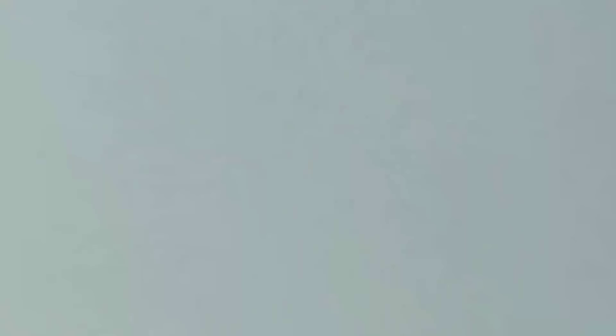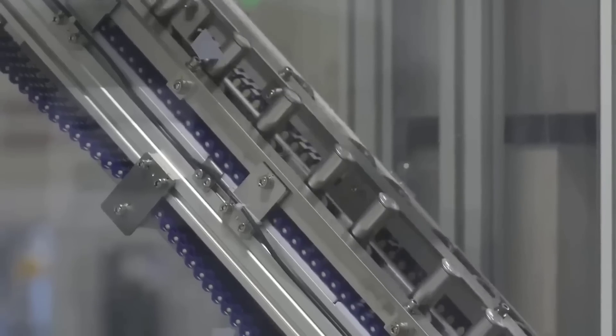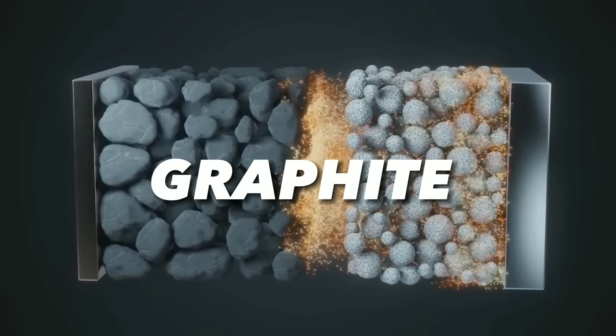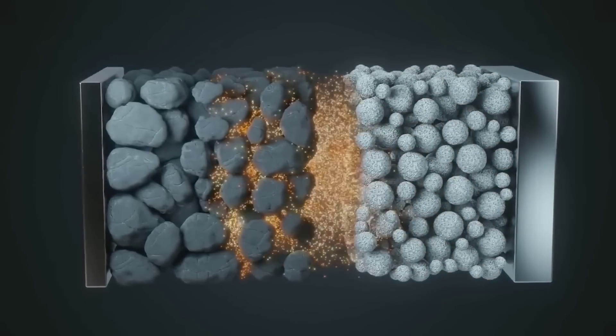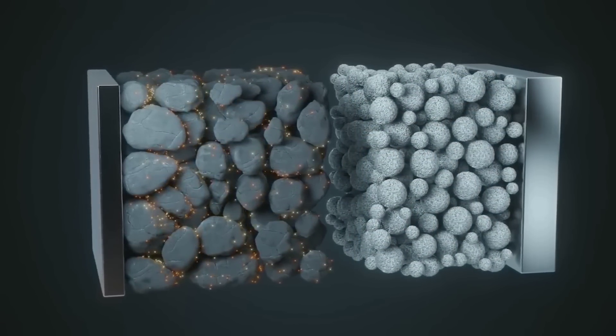The performance of a lithium-ion battery depends largely on the materials used for the electrodes. The most common material for the anode is graphite, which has a layered structure that can accommodate lithium ions between its layers. However, graphite has a limited capacity to store lithium ions, which limits the energy density of the battery.